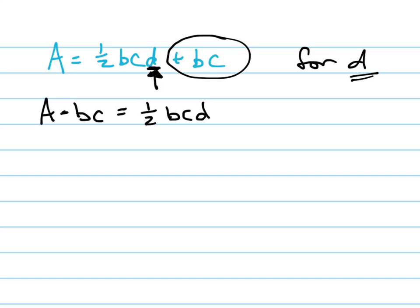Now I need to get rid of this BC, which isn't being added now, it's being multiplied. So how do I get rid of something that's being multiplied? Divide. So A minus BC all over BC equals one-half D.